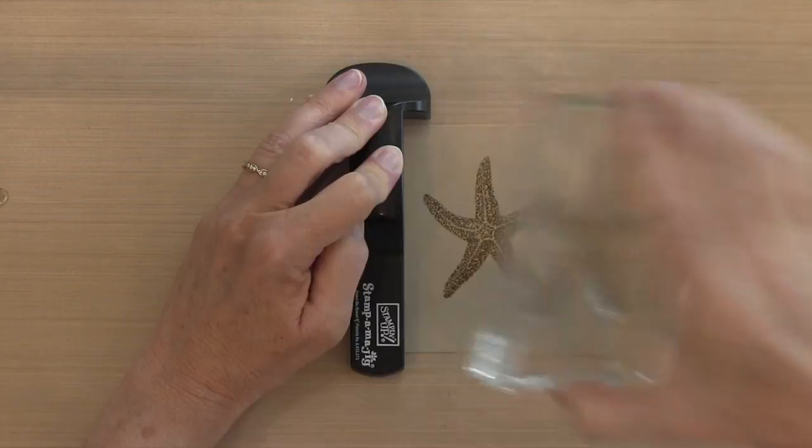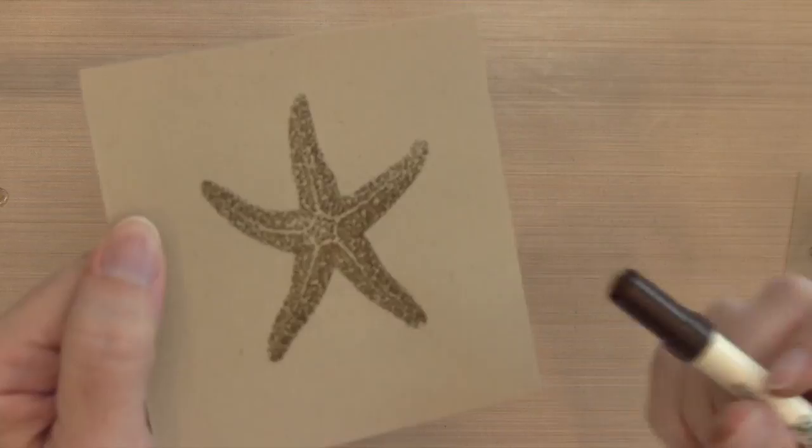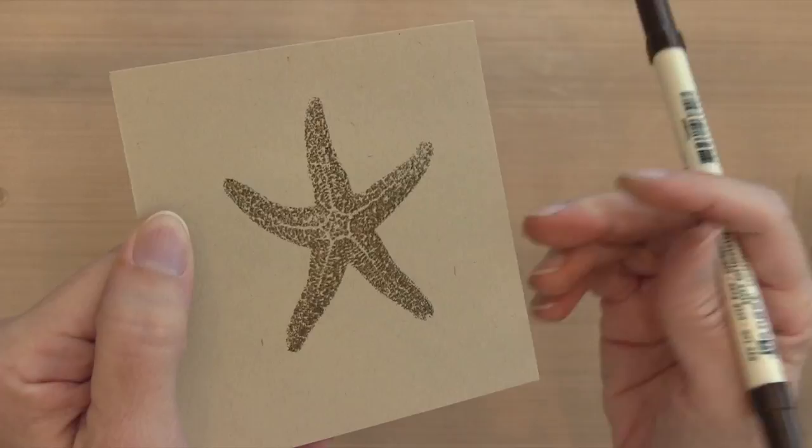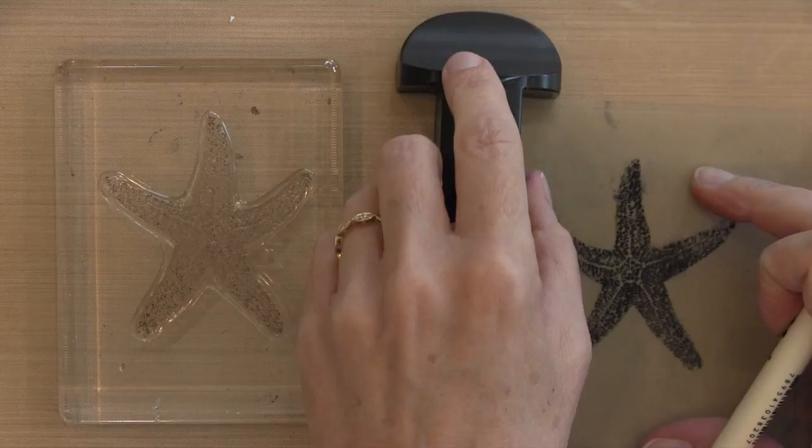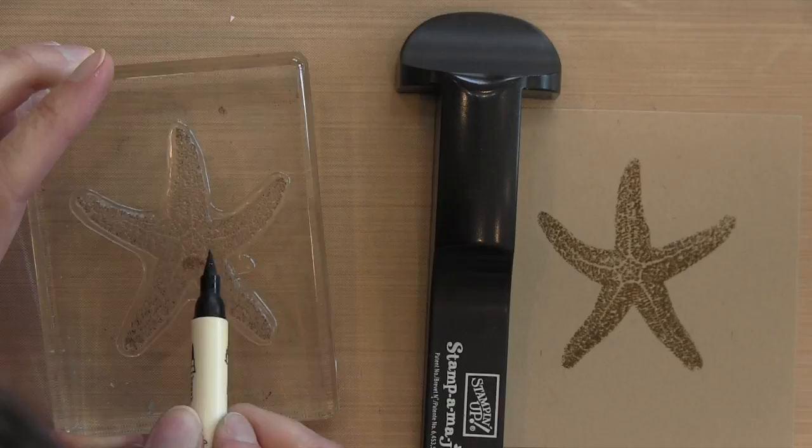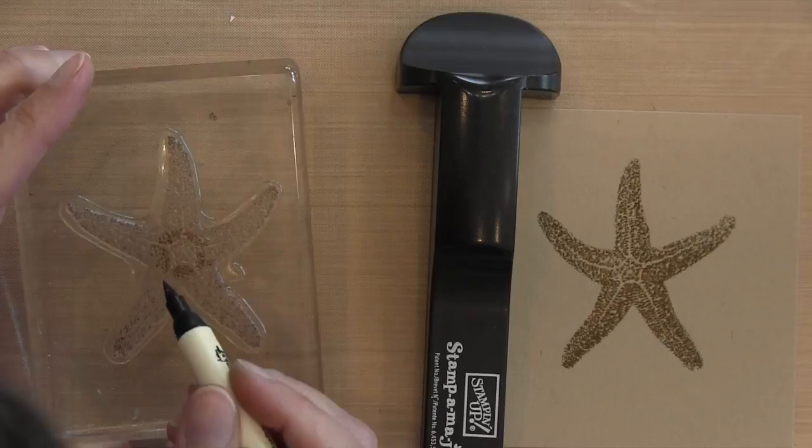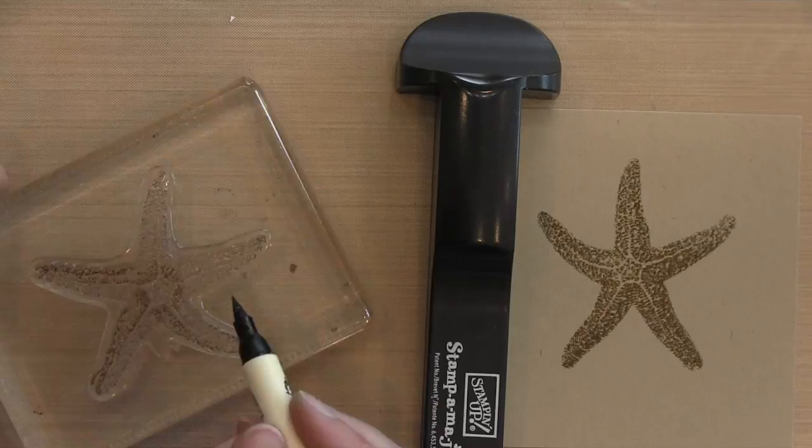I'm going to take my Gathered Twigs marker and I'm going to color kind of where the lines are on this starfish. I'm going to do a coloring directly onto the stamp. I'm just going to get my Stampin' Majig ready so when it's time to stamp I'm ready for it. I'm going to color around the star, so you can see I'm kind of coloring right around that center area and then I'm going to color down one side of that line, that kind of blank line in the middle, and a little bit on the edges as well.